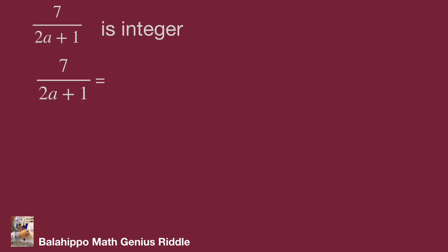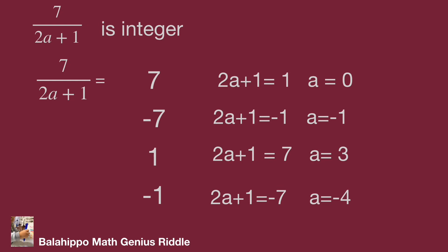The value of 7 over 2a plus 1 could be 7, minus 7, 1, and minus 1. If 7 over 2a plus 1 equals 7, then 2a plus 1 equals 1, and a equals 0. If it equals minus 7, then 2a plus 1 equals minus 1, and a equals minus 1. Similarly for the other factors.